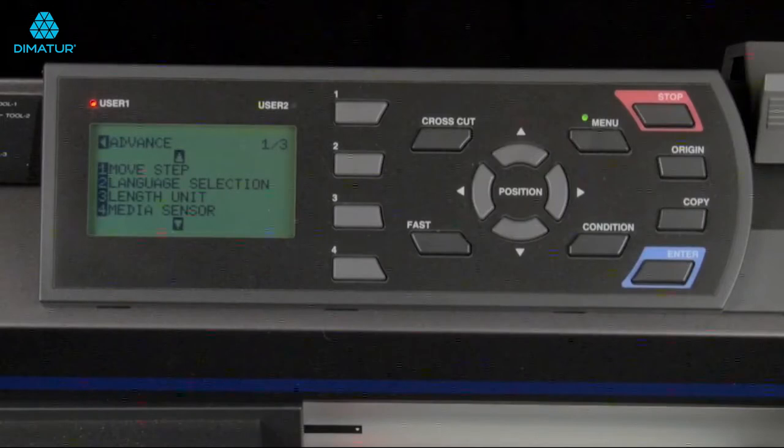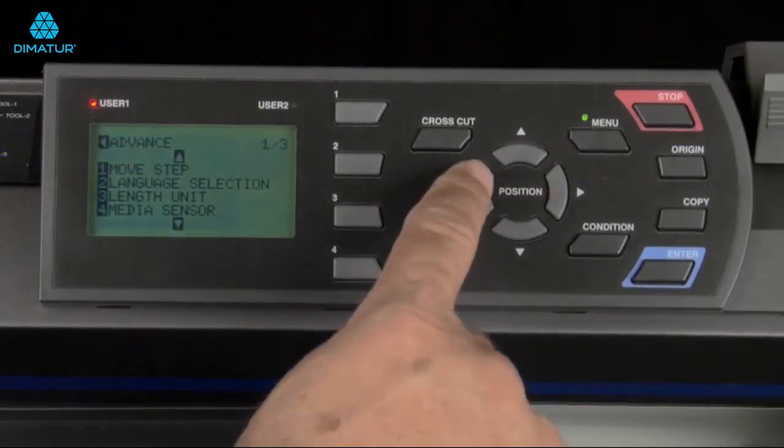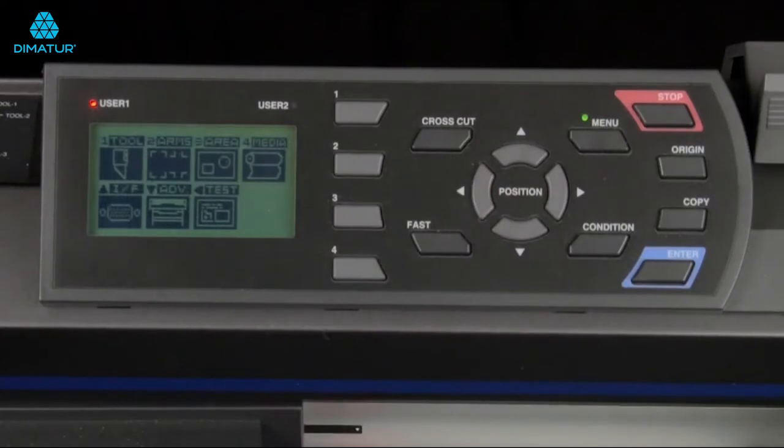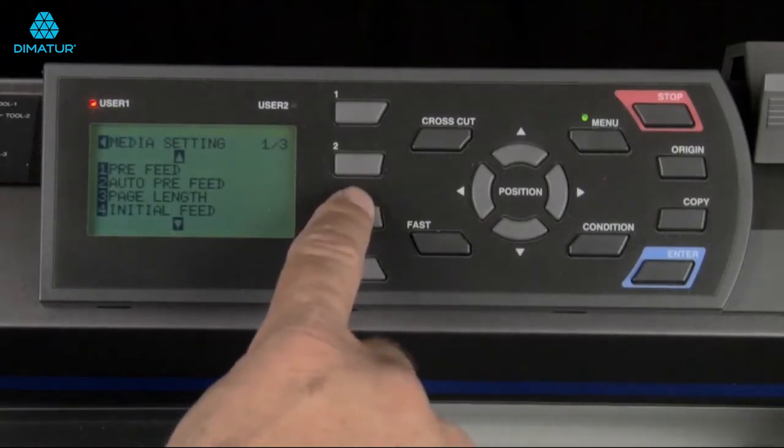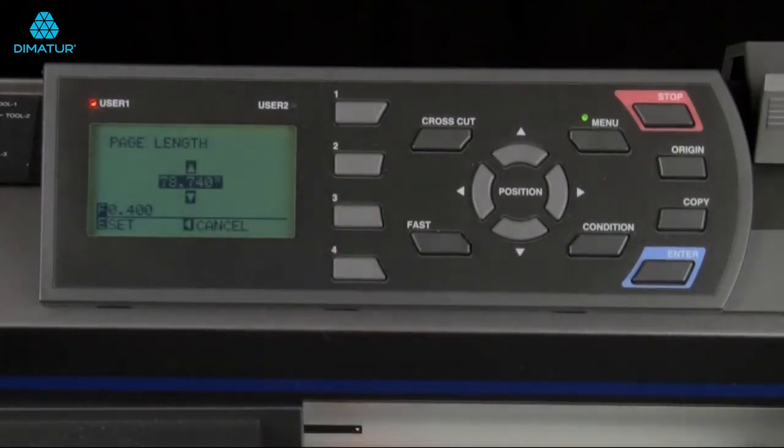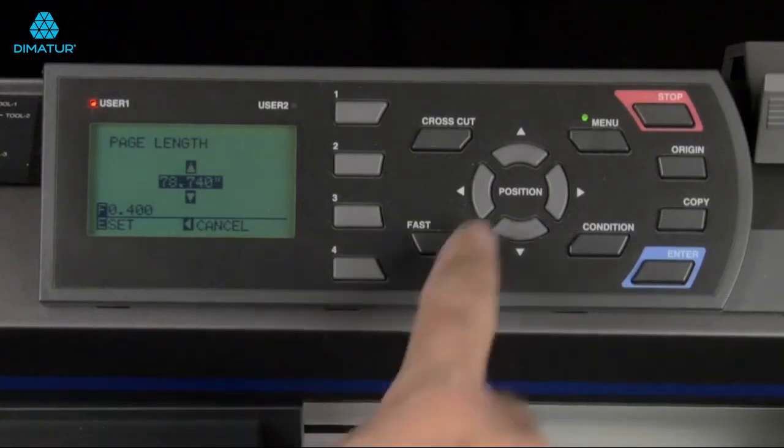Next is to set the page length. First, let's get back to the main menu by pressing the left arrow key. Next, press the four key for media. Press the three key for page length. Now press the up arrow key to increase the value to a little over twelve hundred inches, which will give us a hundred feet to work with.